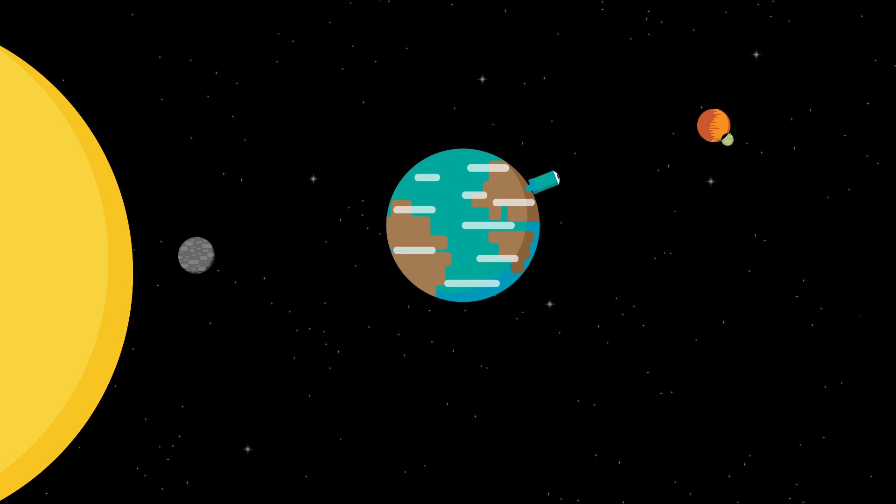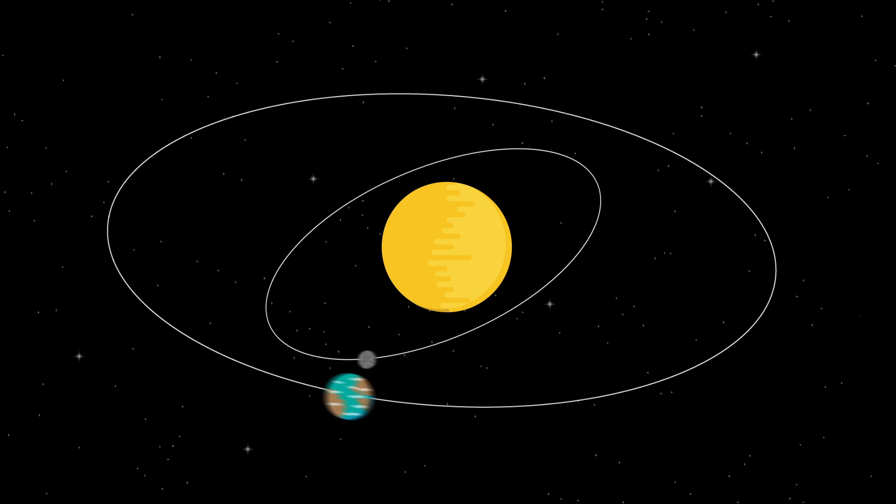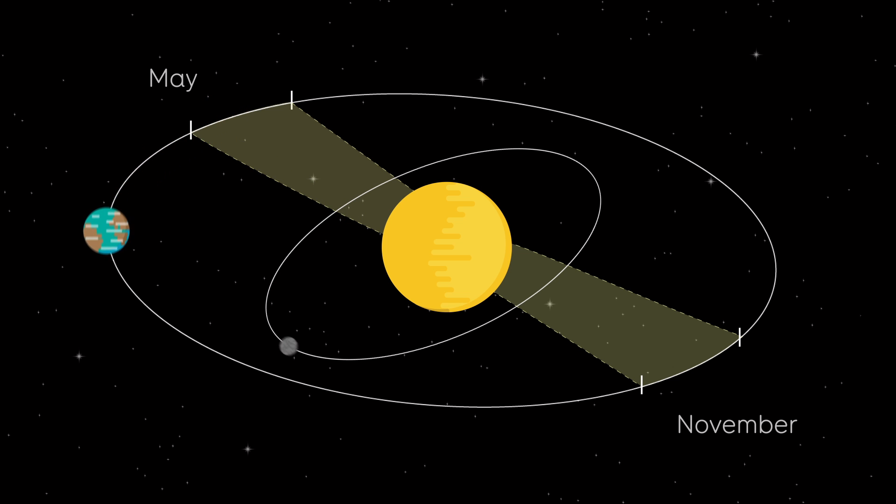But transits of Mercury are rare, because Mercury's orbit is tilted relative to the Earth. That means Mercury can pass exactly between us and the Sun only when we are on the part of our orbit that crosses Mercury's orbital plane.